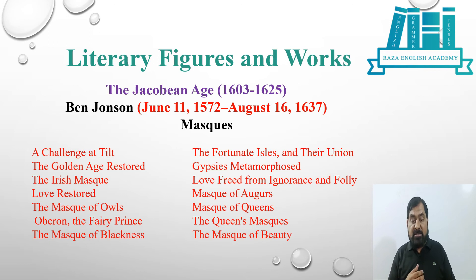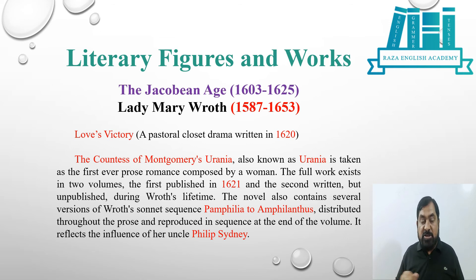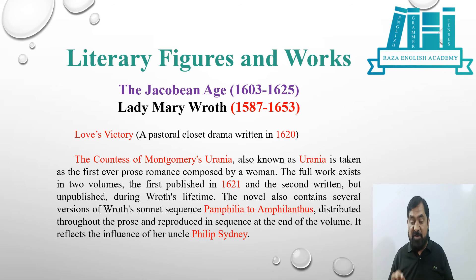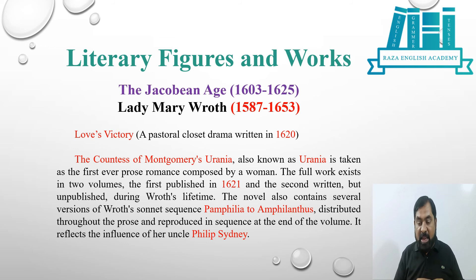The next writer in the Jacobean Age is Lady Mary Wroth, born in 1587 and died in 1653. Her important works include Love's Victory, a pastoral closet drama written in 1620, and The Countess of Montgomery's Urania — also known simply as Urania — taken as the first ever prose romance composed by a woman. The full work exists in two volumes, the first published in 1621, the second written but unpublished during Wroth's lifetime. She also wrote the sonnet sequence Pamphilia to Amphilanthus. Another thing to keep in mind: she was the niece of Sir Philip Sidney.